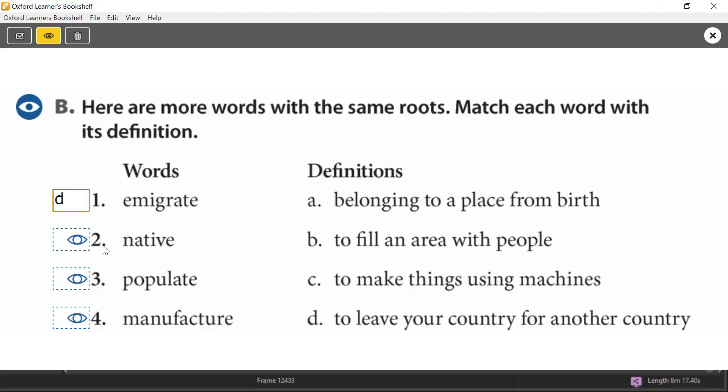Number two. Native. What's the root word here? Native. Native. Yes, the root word is N-A-T. Nat. To do with somewhere where you're born. Something to do with birth. Where you're from. Shall we look at the choices again? To fill an area with people? No. We're looking for N-A-T to do with birth and when you're born. Excellent. That's A. Belonging to a place from birth. From birth. So we know that native is A.